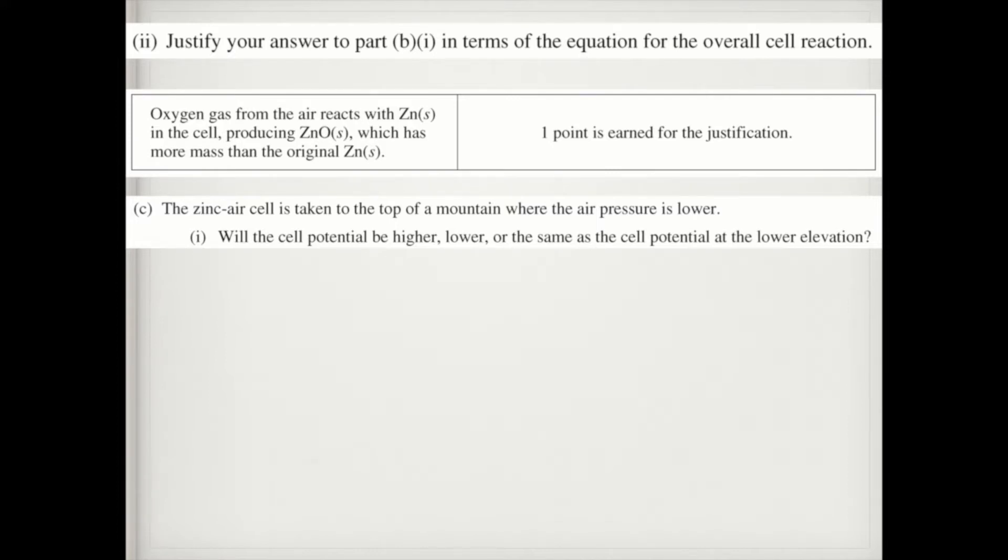So if you think about this in terms of Le Chatelier's principle, it would shift to the left to make up for that loss. Since we're not going to be talking about shifting, though, we need to be talking about Q and K. What you would say is since Q is going to be larger than K, since you've reduced the amount of reactant, that means that it's going to proceed towards the reactant side, which means if you're proceeding to the reactant side, that means that your cell potential would decrease in magnitude.